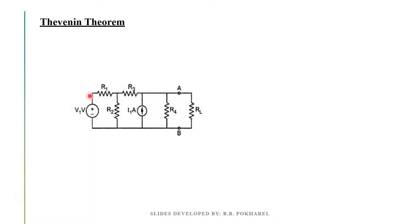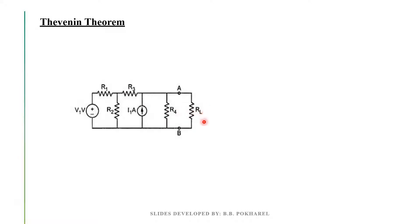So, this circuit can be very complex. We can use this one, two, three, four, five. If you have 5 resistances, you can use R5.